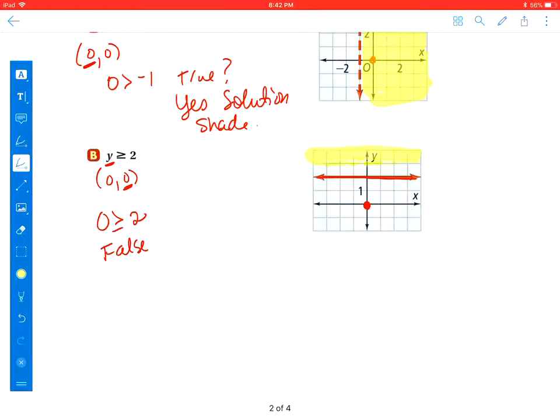So we know that that means that that region, that 0 should not be shaded. So I need to shade the top region.